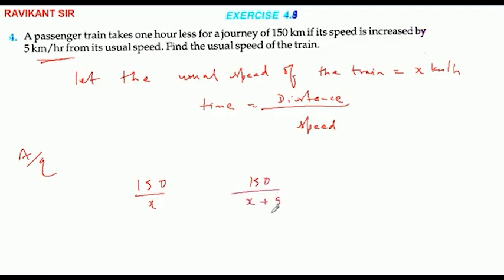So the time is less, the time will be 1 hour less. The speed is bigger, one hour less. This is divided by x plus 5 minus divided by x equal to 1.